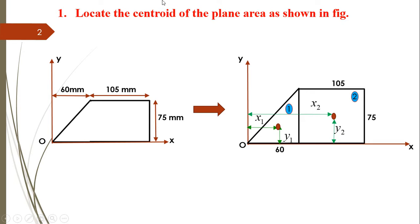Let us see the first problem: locate the centroid of the plane area as shown in the figure. Here a figure is given, O is the origin, and one figure of having some irregular shape is provided. The dimensions of that plane lamina are also given, and we have to determine the center of gravity point of this complete plane lamina with respect to origin O.